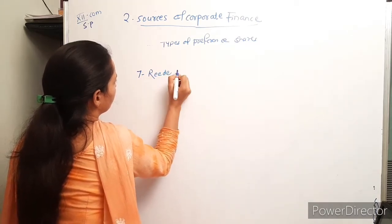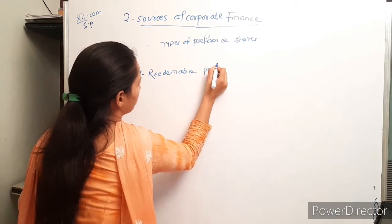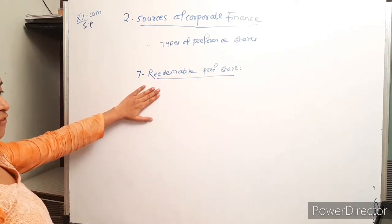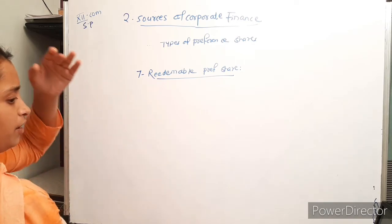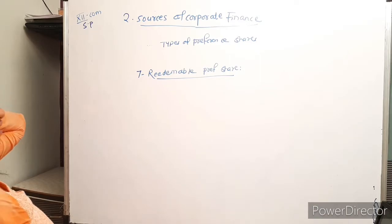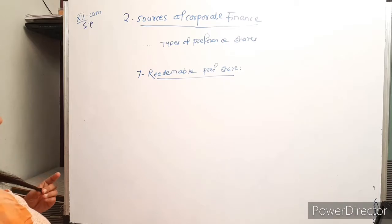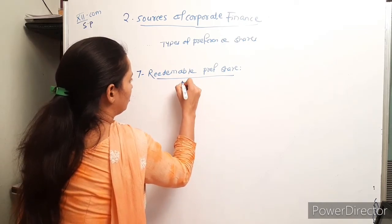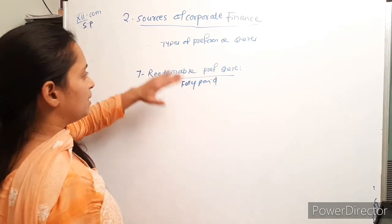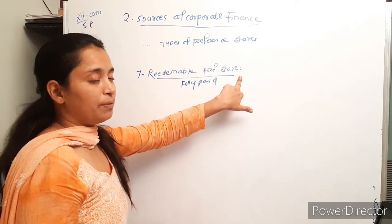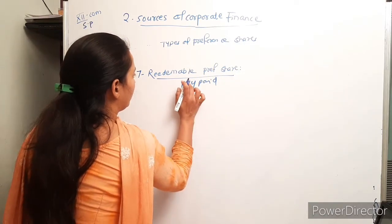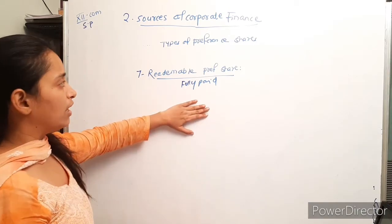The fourth type is redeemable preference shares. Shares which can be redeemed after a certain period of time are called redeemable preference shares. A company authorized by its articles of association can issue such shares, which must be fully paid and are redeemed out of profits only.